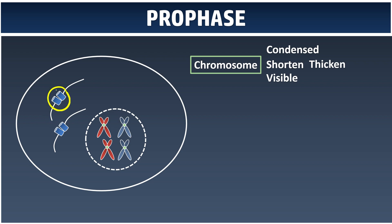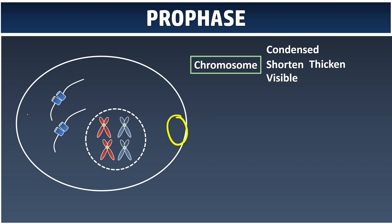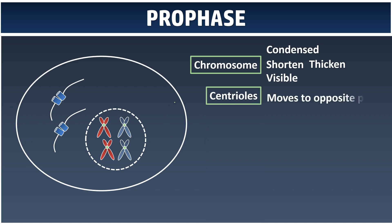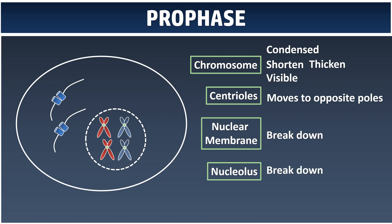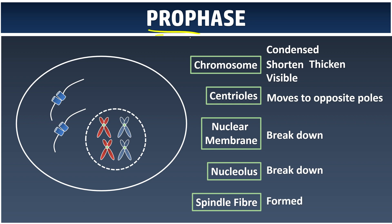What happens to our centrioles in prophase? The centrioles, our fishing rods, move to the poles — the left end and right end of the cell. The centrioles move to the poles to get ready for fishing. What happens to our nuclear membrane? Since we want fair fishing, we don't want the chromosomes bounded by the nuclear membrane, so the nuclear membrane breaks down together with the nucleolus. Now everything is ready — the spindle fiber is formed, completing prophase. We can think of prophase as just preparation.